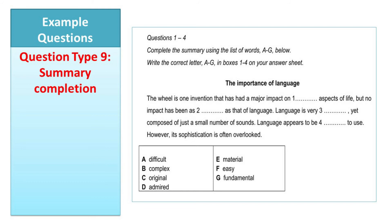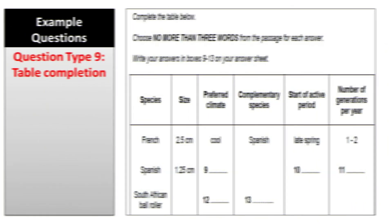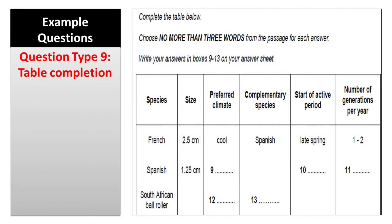Question type nine can also have a flow chart, which is a kind of process consisting of different stages. Parts of these stages are missing; you read the text, find those parts, and fill in the process. Similarly, table completion involves a table where certain parts are missing and you need to read the text to fill in those missing parts.